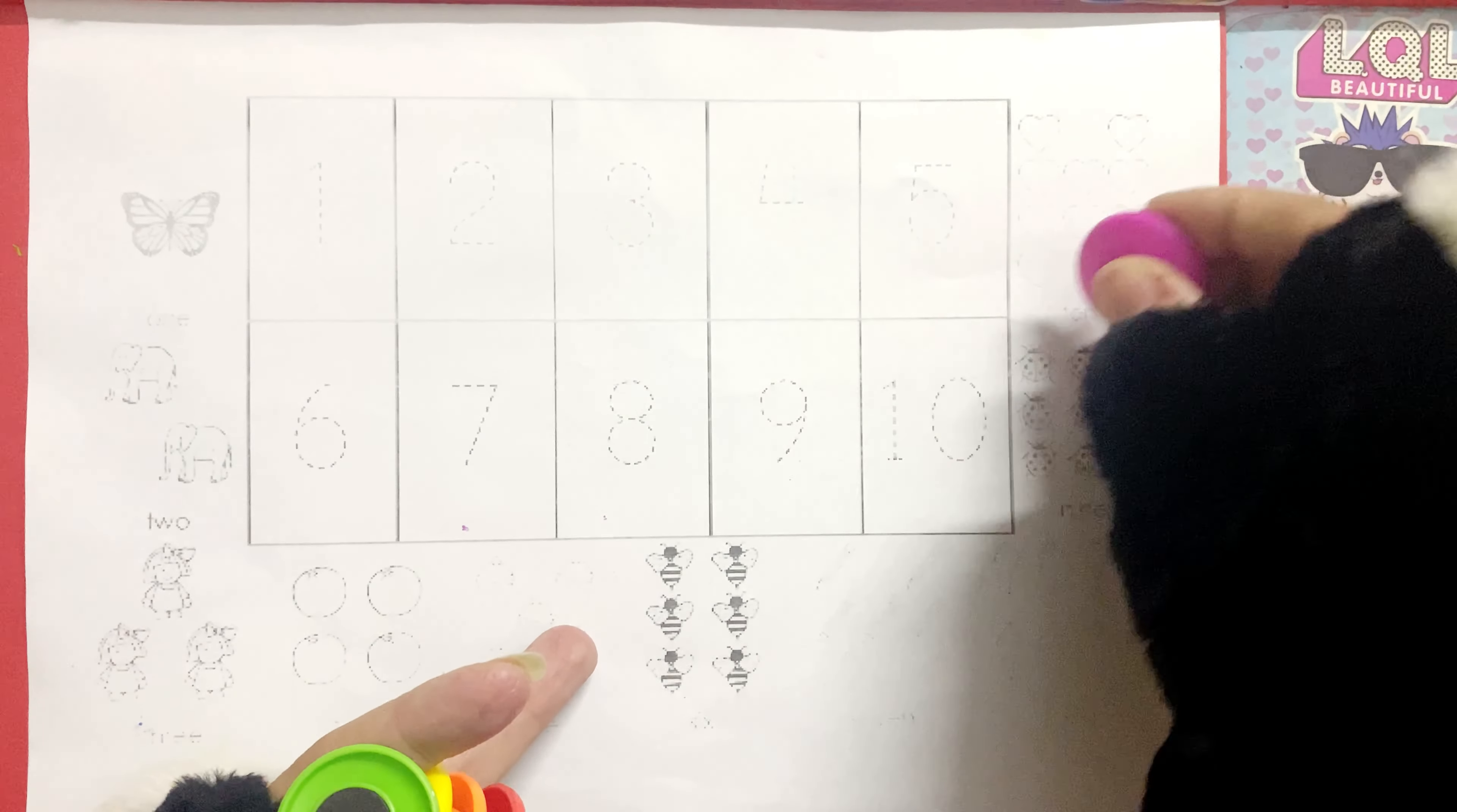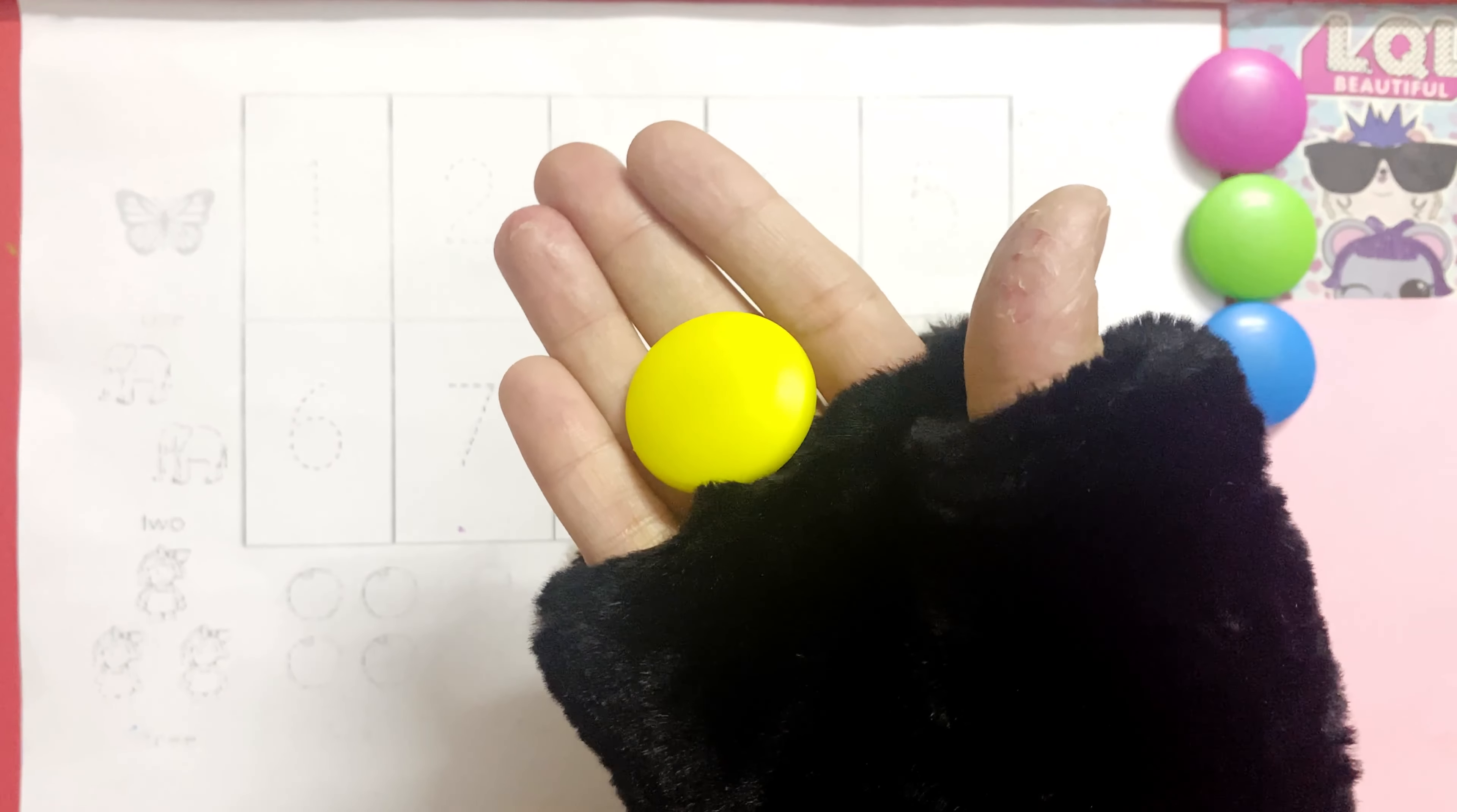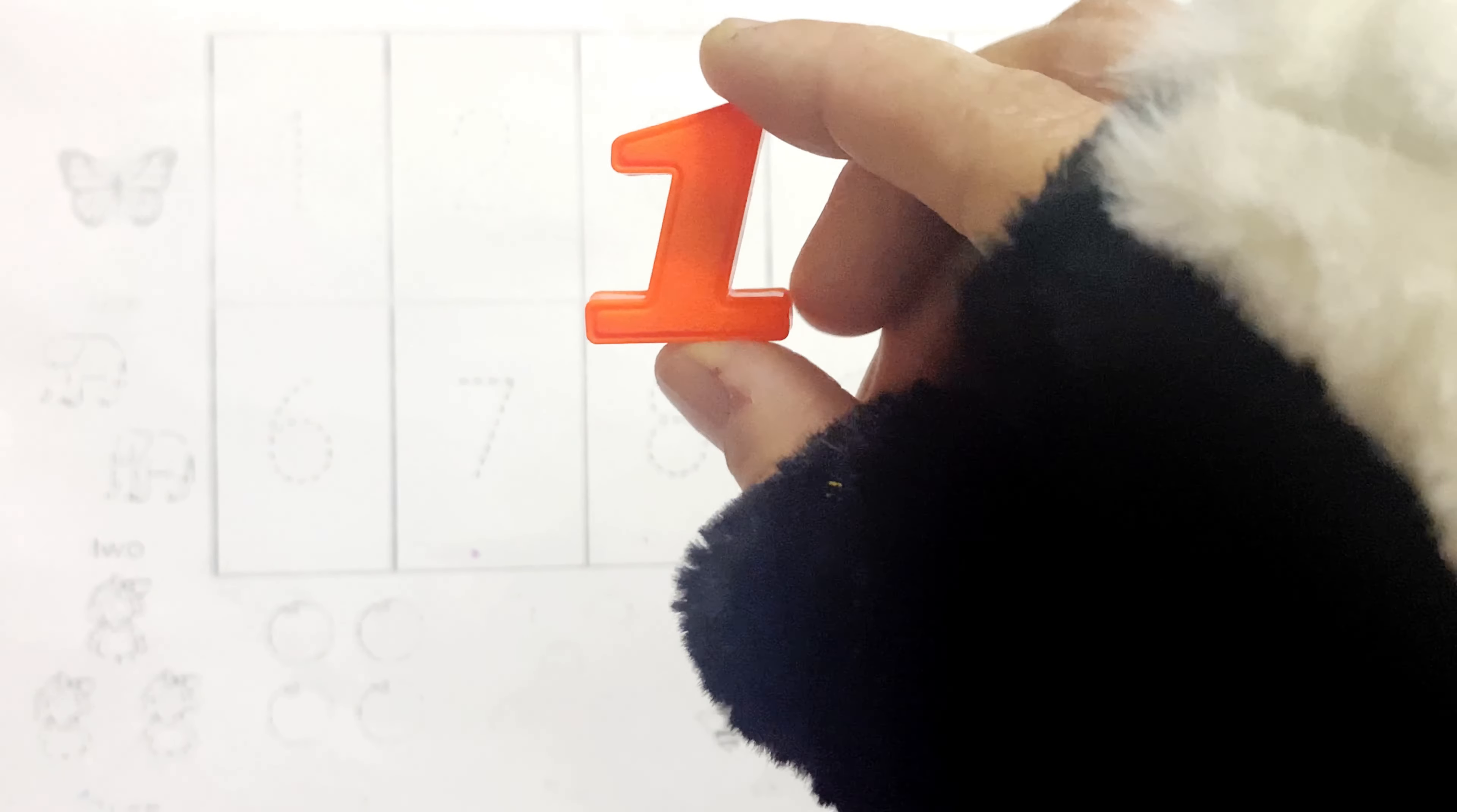Pink color, pink color. Green color, green color. Blue color, blue color. Yellow color, yellow color. Orange color, orange color. Red color, red color. One.